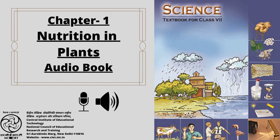Exercise: 1. Why do organisms take food? 2. Distinguish between a parasite and a saprotroph. 3. How would you test the presence of starch in leaves? 4. Give a brief description of the process of synthesis of food in green plants. 5. Show with the help of a sketch that plants are the ultimate source of food. 6. Fill in the blanks: Green plants are called blank since they synthesize their own food. The food synthesized by plants is stored as blank.